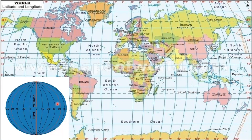The lines of longitudes are drawn on the globe in multiples of 15, and they are numbered accordingly. Every 15 degrees of longitude corresponds to one standard time zone, and places within the same time zone share the same time.